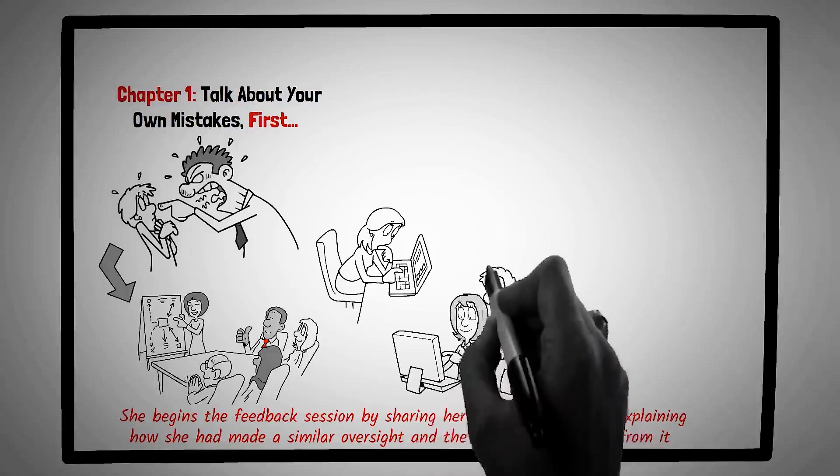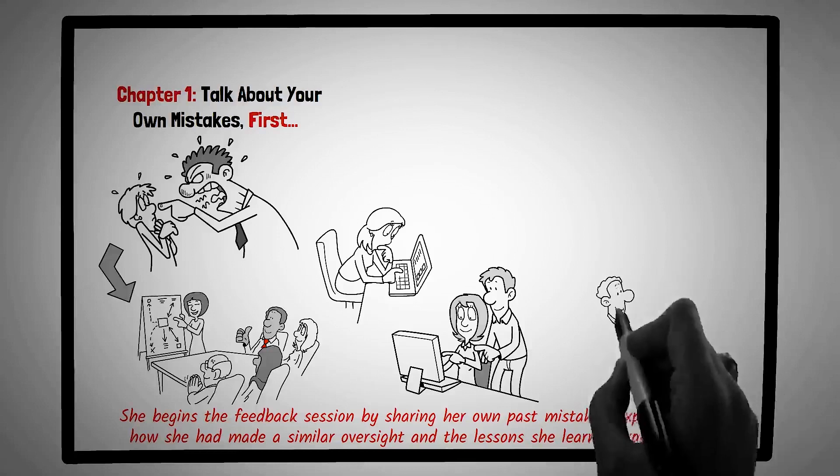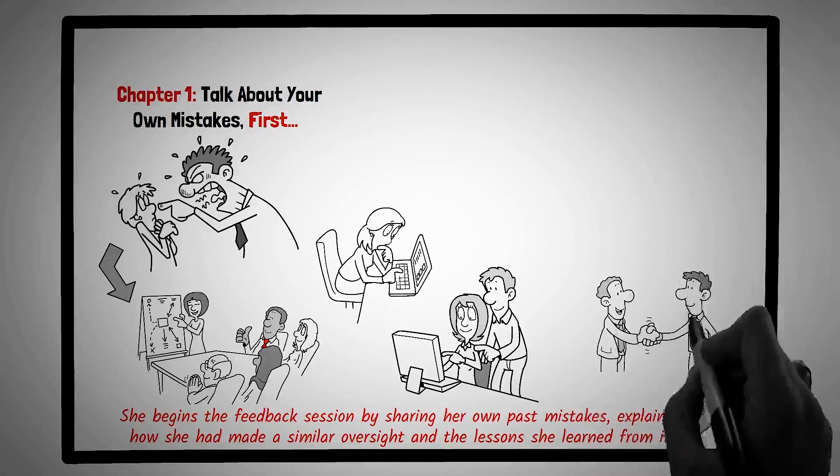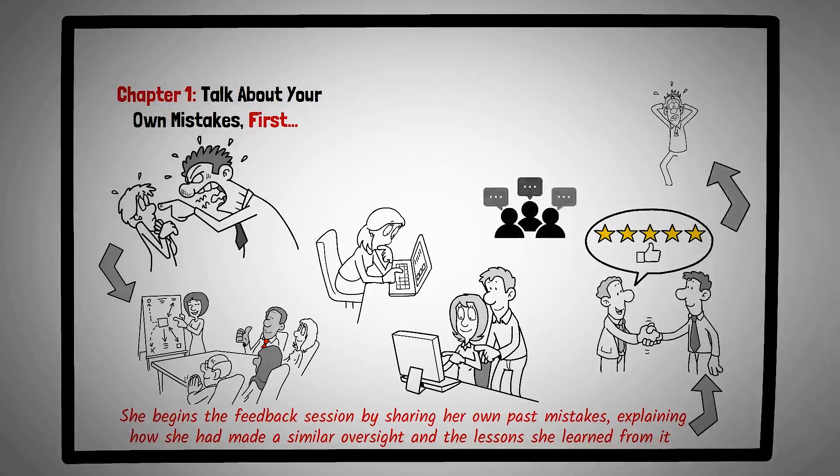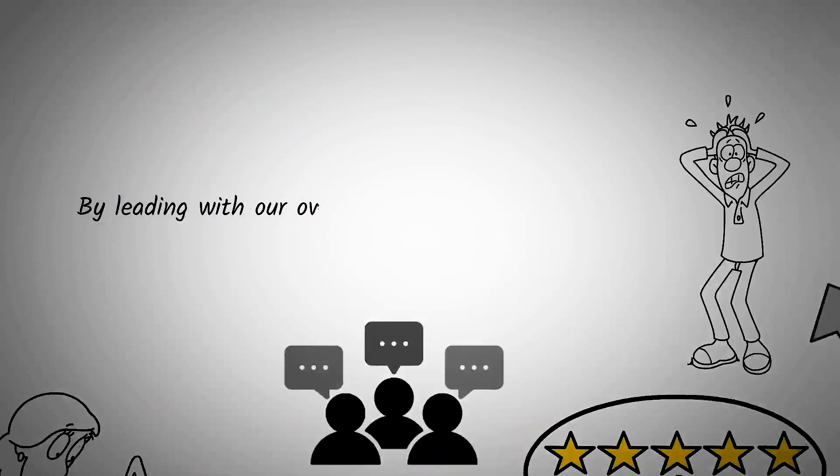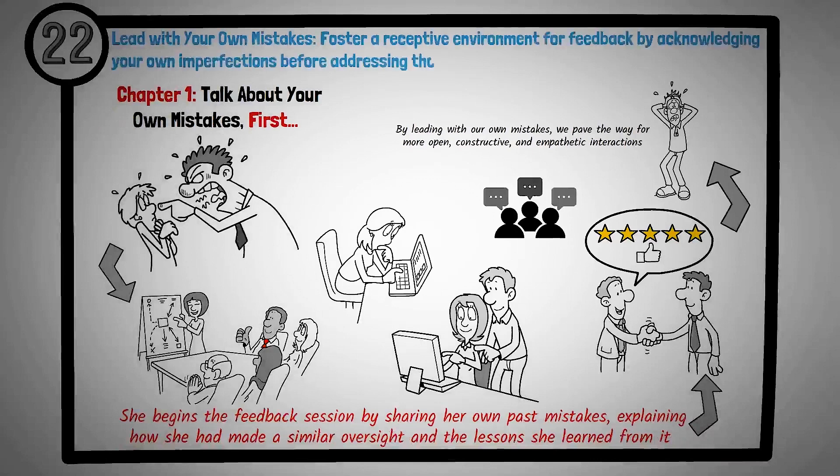When you find yourself in a position to provide feedback or point out an error, start by sharing a personal anecdote or mistake related to the topic at hand. This approach not only humanizes you, but also creates a more open and constructive environment for discussion. Admitting our own imperfections isn't a sign of weakness. It's a testament to our humility and a bridge to more effective communication. By leading with our own mistakes, we pave the way for more open, constructive, and empathetic interactions. Principle number twenty-two is lead with your own mistakes. Foster a receptive environment for feedback by acknowledging your own imperfections before addressing those of others.